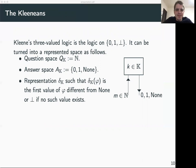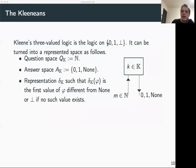Another useful finite space is the space of Kleene's three-valued logic. This is an extension of the Booleans: we have zero and one corresponding to false and true, and a third element bottom that stands for undefinedness. This can be turned into a represented space by using the following representation.